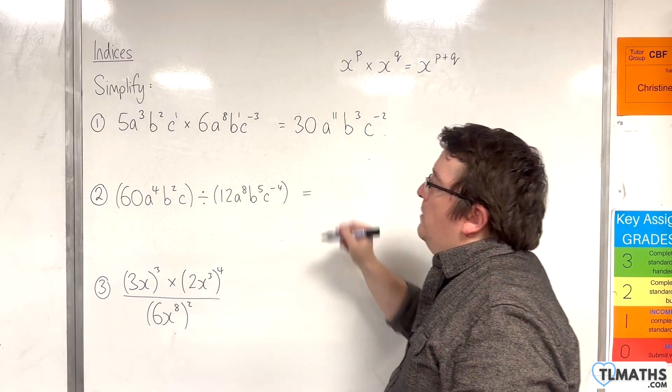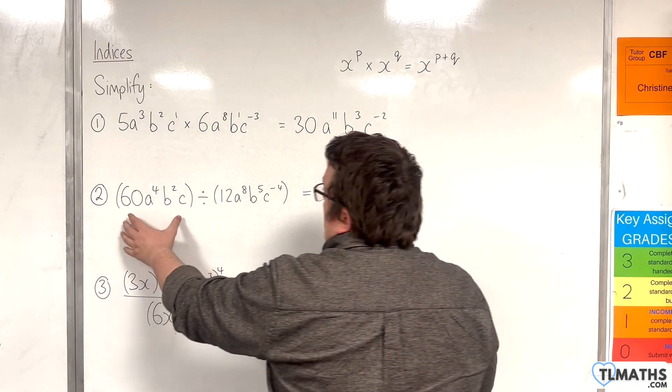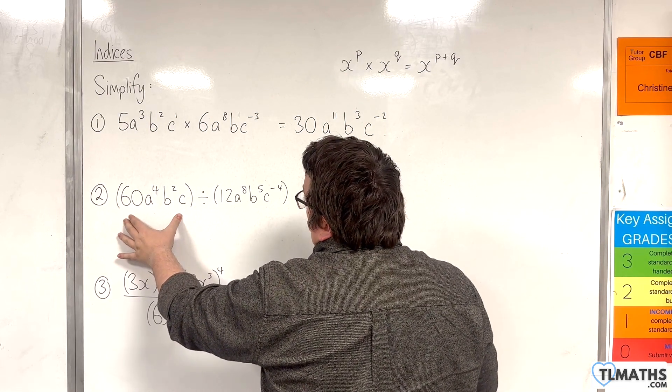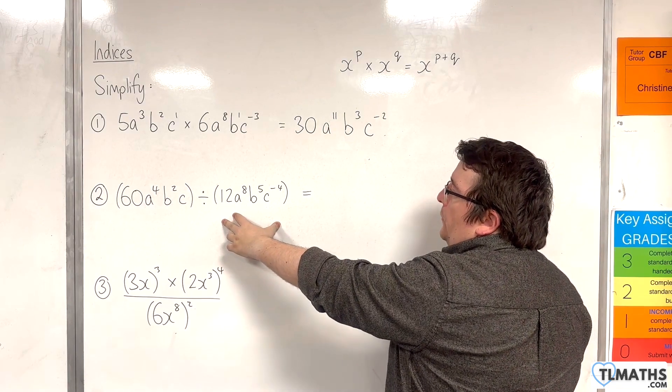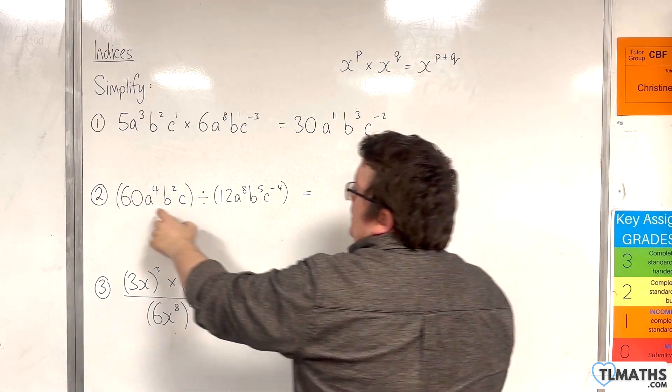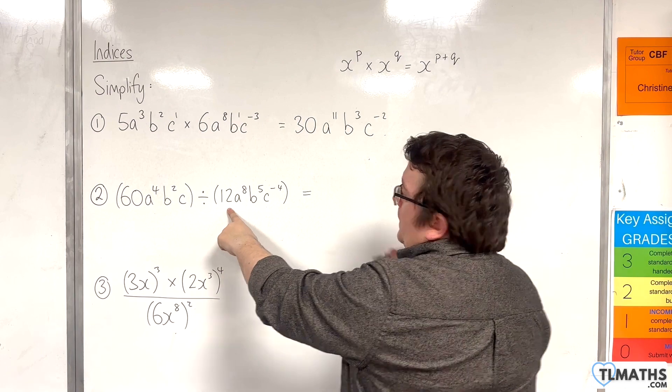Now, for the second one, I'm going to use a similar tactic. I've got 60a to the 4b squared c, all divided by 12a to the 8b to the 5c to the minus 4. Now, 60 divided by 12 is 5.